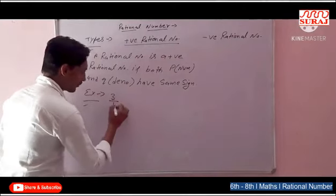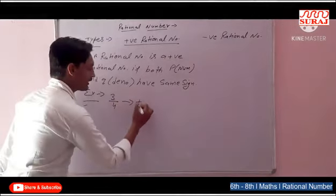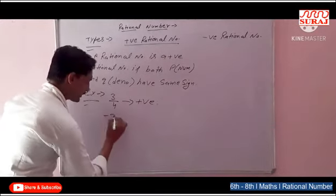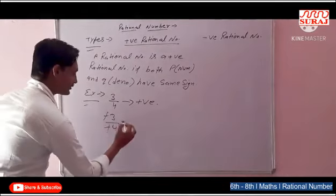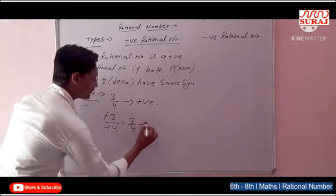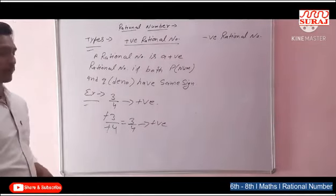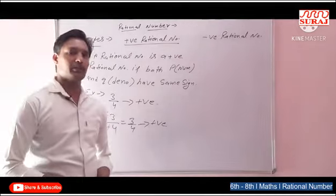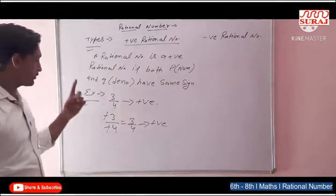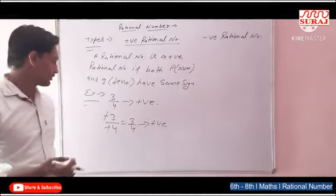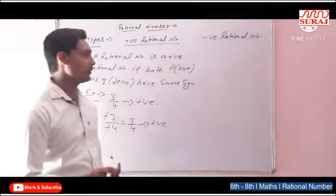Example: 3 by 4 — 3 positive, 4 positive, therefore it is a positive rational number. Minus 3 and minus 4 — negative cancels and gives 3 by 4, it means this is the same number, a positive rational number. So when we check whether a given rational number is positive or negative, we check that numerator and denominator both have the same sign or different sign.